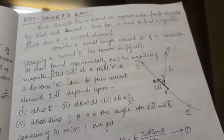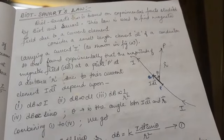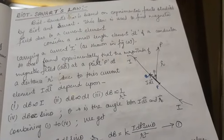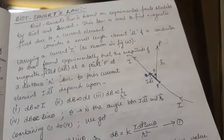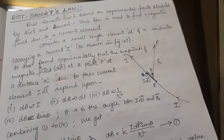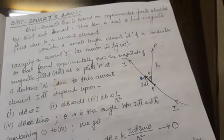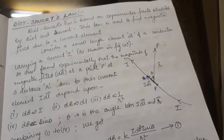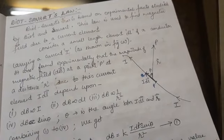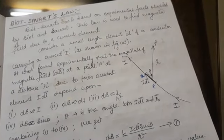Good afternoon dear students. Today I am going to start your section A of paper C. My section A consists of one and a half chapters, from which I am taking up this topic: Biot-Savart's law. Biot-Savart's law is based on experimental facts that were studied by Biot and Savart, the two scientists.